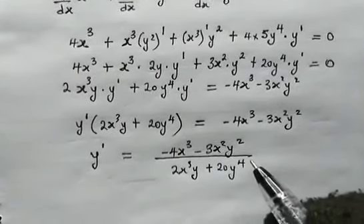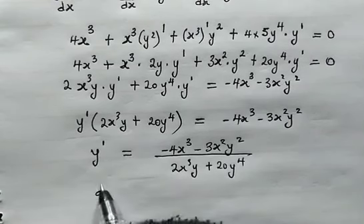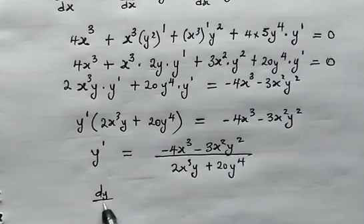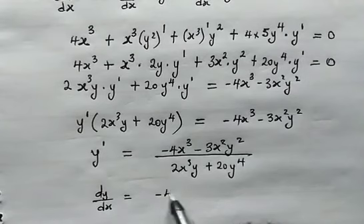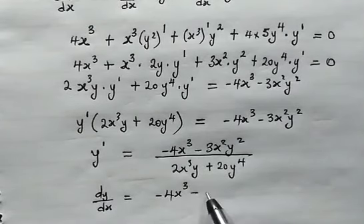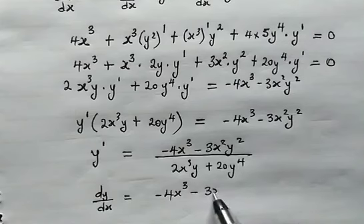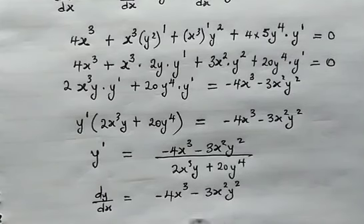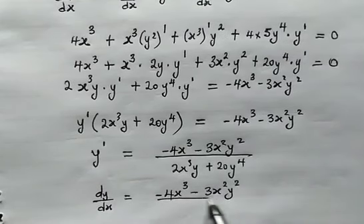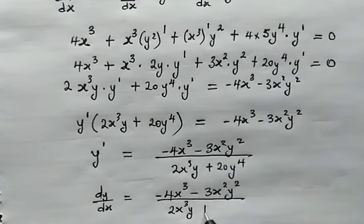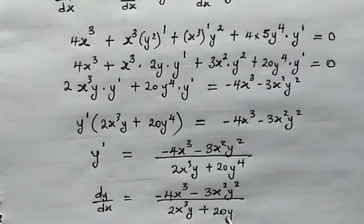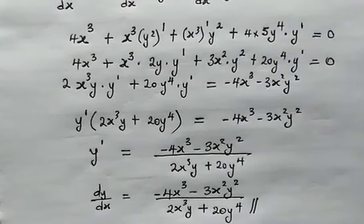Do not forget that y prime is dy/dx. From here, we find the derivative as negative 4x cubed minus 3x squared y squared, all over 2x cubed y plus 20y to the power of 4. And this is the right answer.